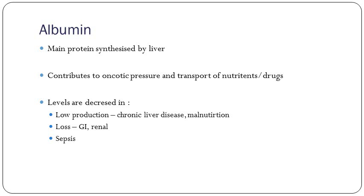Albumin is a protein and is the true measure of liver function. Patients who have liver failure get very swollen because they lose oncotic pressure. But remember that albumin is affected by a lot of things — malnutrition is a very big one. You will see people suffering from that on the wards.